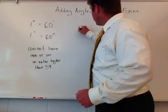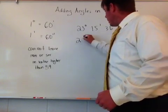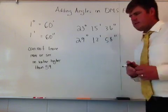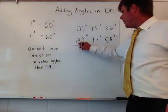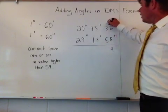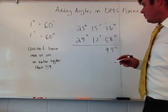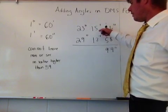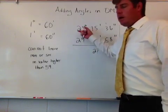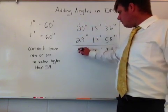So 23 degrees 15 minutes 36 seconds, and then 29 degrees 12 minutes and 58 seconds. We're just going to add each column by itself. 36 and 58: 6 and 8 makes 14, carry the 1, I get 4 and 5 which makes 9, so I get 94 seconds. 15 and 12: 5 plus 2 is 7, and 1 and 1 makes 2, so I get 27 minutes. Then 23 plus 29: 9 and 3 makes 12, carry the 1, and you get 52 degrees.